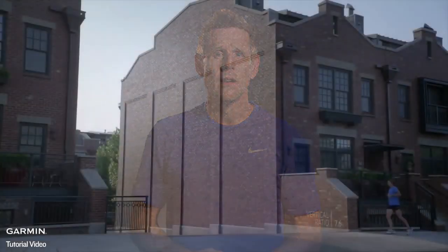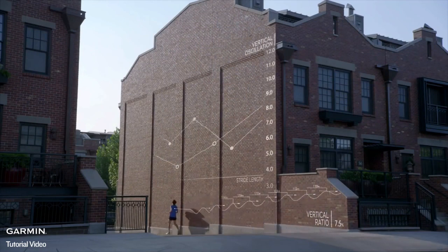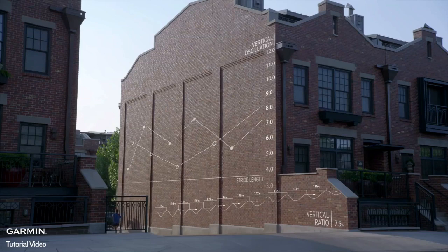Next is vertical ratio, a metric that reflects running efficiency, or how well you propel yourself forward. By the numbers, vertical ratio is your vertical oscillation, or amount of bounce, divided by stride length, expressed as a percent. It is a cost-benefit ratio for running.